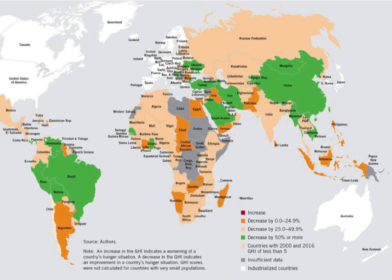Globally, there are an estimated 68.5 million displaced people, including 40.0 million internally displaced people, 25.4 million refugees, and 3.1 million asylum seekers. For these people, hunger may be both a cause and a consequence of forced migration.